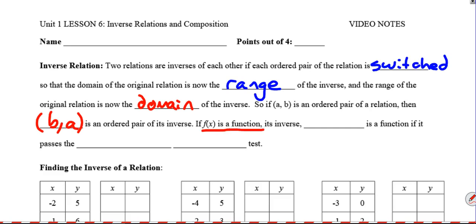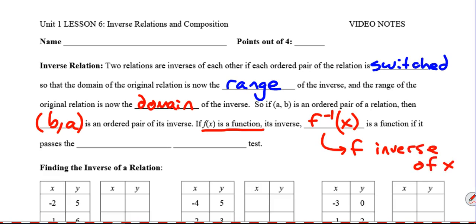If f(x) is a function, its inverse — we use f to the negative 1, but that means f inverse of x. That negative 1 is a symbol for inverse, not the reciprocal. So if f(x) is a function, its inverse f⁻¹(x) is a function if it passes the vertical line test. Any relation is a function if it passes a vertical line test on a graph. So if we find the inverse of a function and the inverse is a function, it will pass a vertical line test.